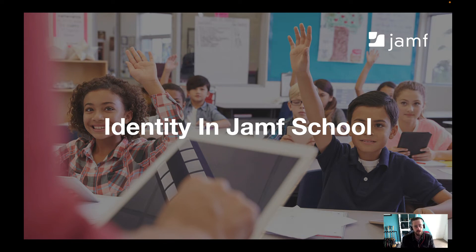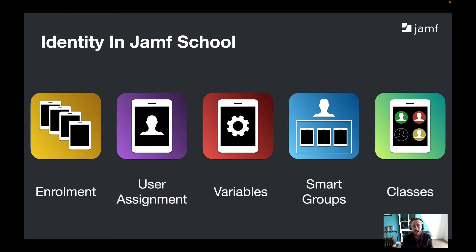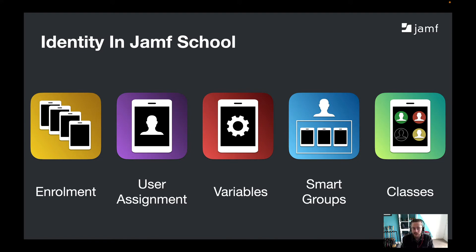Let's first have a look at identity in Jamf School in general. Why might we need identity in Jamf School? It's a whole host of reasons. Maybe it's when you're enrolling devices — if you have a one-to-one scheme, it's really easy to use that identity to tie to a device so that when it comes to management, it's easy to identify who it is through a user assignment. Then maybe build up some smart groups and variables to create a zero-touch workflow. If you know a student is in year nine versus year seven, they might have different configurations and applications, for example.